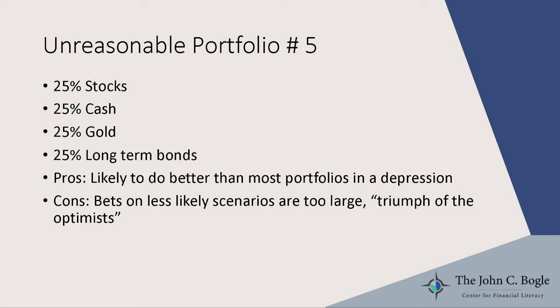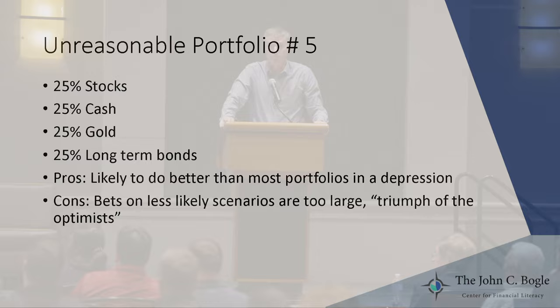The permanent portfolio — stocks, cash, gold, and long-term bonds at 25 percent each — might do better than most portfolios if the Great Depression happens again. But the problem is it bets on less likely scenarios. The truth about investing might be called 'the triumph of the optimists' — over the long run, optimists have been very much right. Taking a large portion of your portfolio and assuming bad things are likely to happen is the core problem with the permanent portfolio.